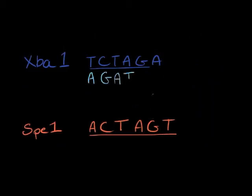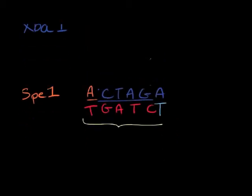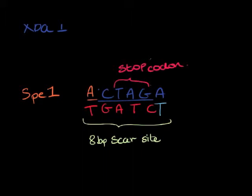The most important sites are XbaI and SpeI. These sites hybridize to one another between the insert and plasmid, forming a scar site with embedded stop codon TAC, TAG, AG.